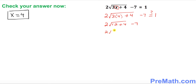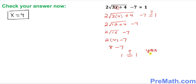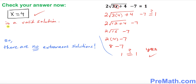So 2 times the square root of 16 — which is 4 — minus 7 gives us 8 minus 7, which equals 1 on the left hand side. Our right hand side is 1 as well. Are both sides equal? Yes — so we've checked our answer, and x equal to 4 is our valid answer. Since this is a valid solution, there are no extraneous solutions.